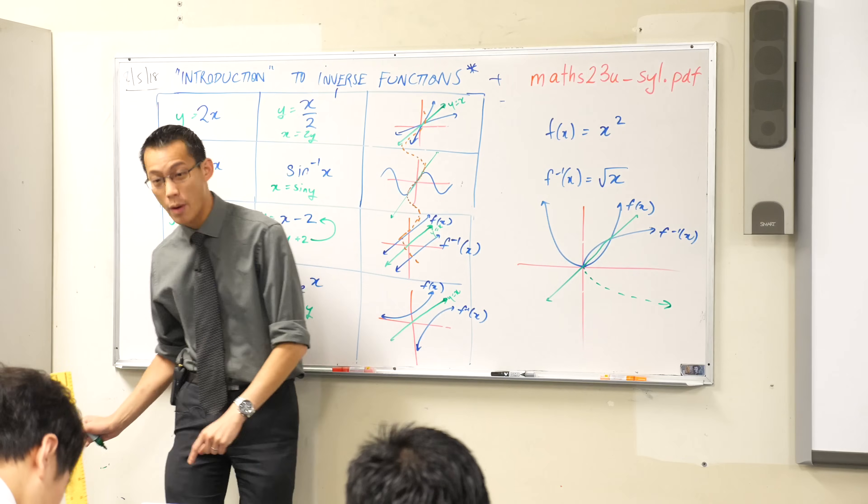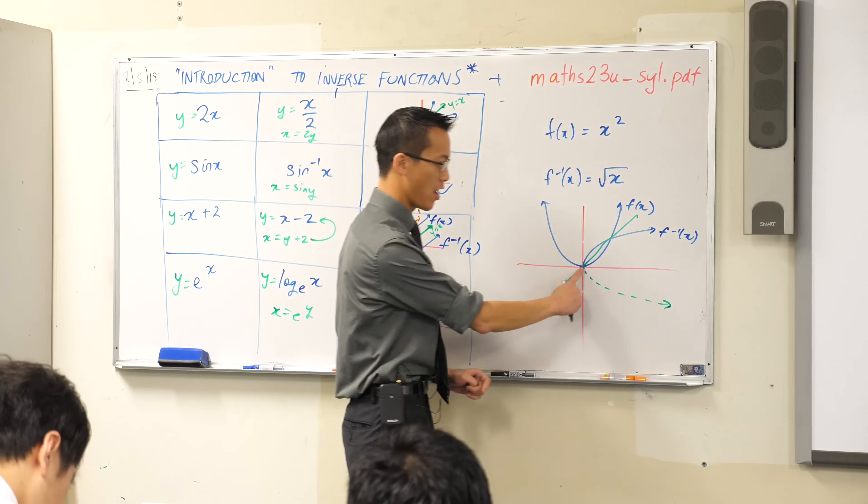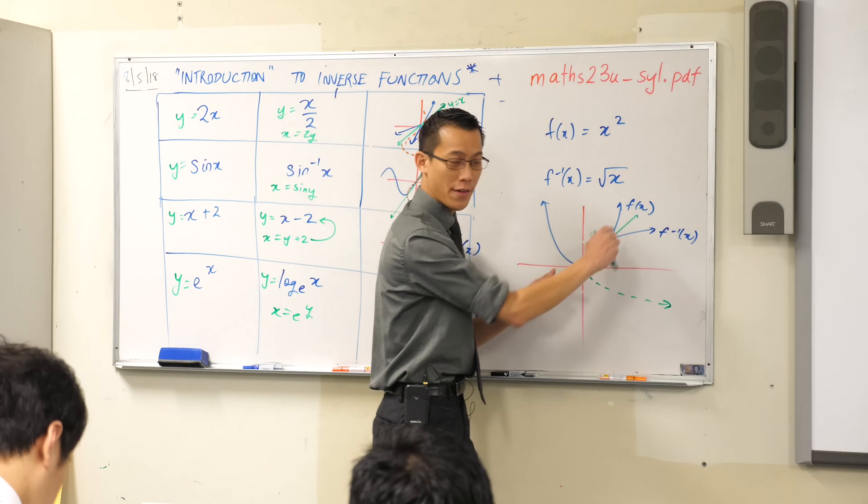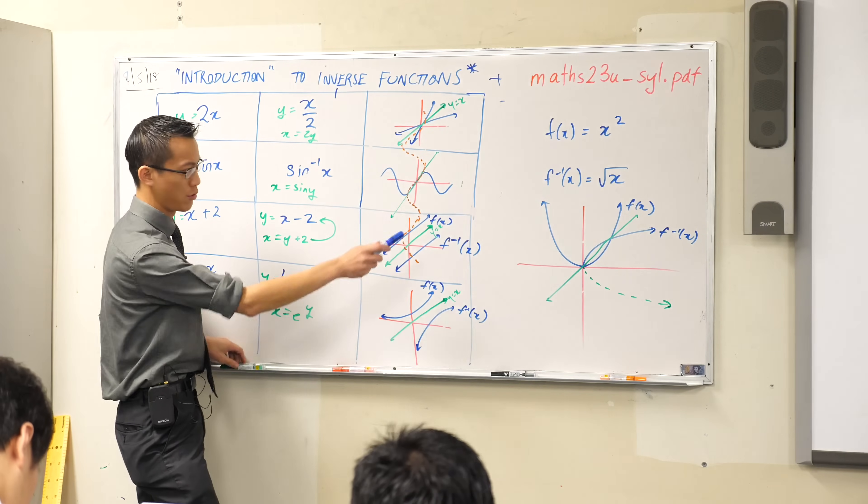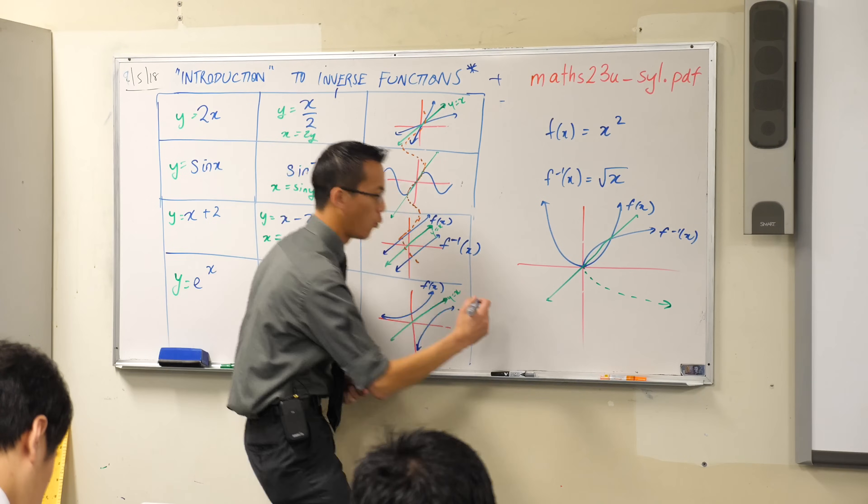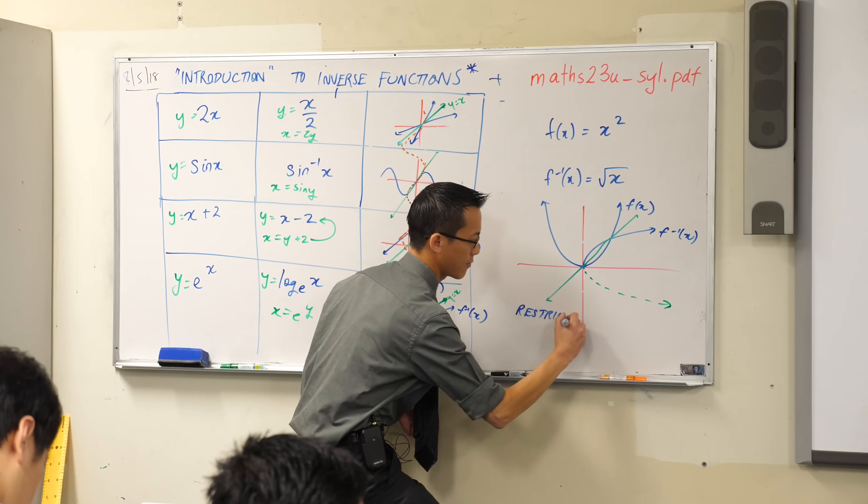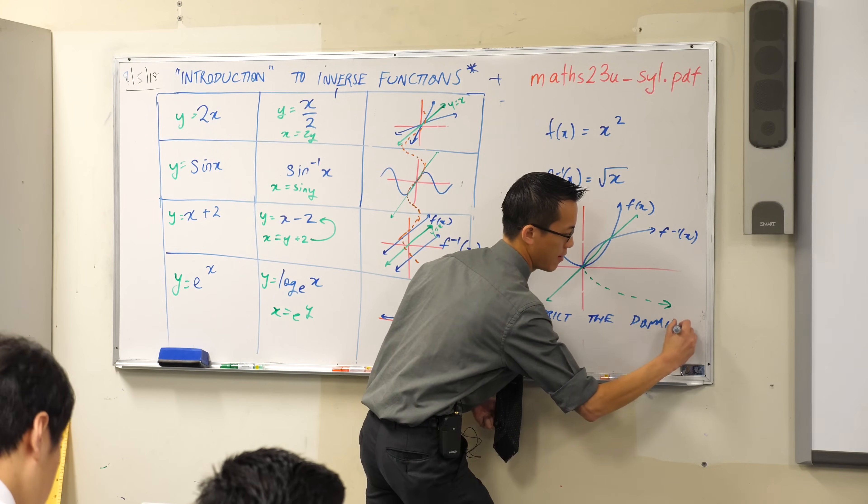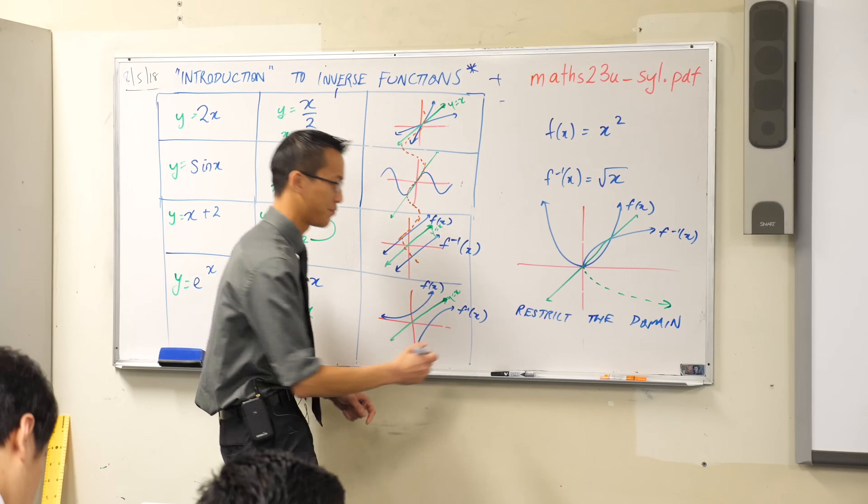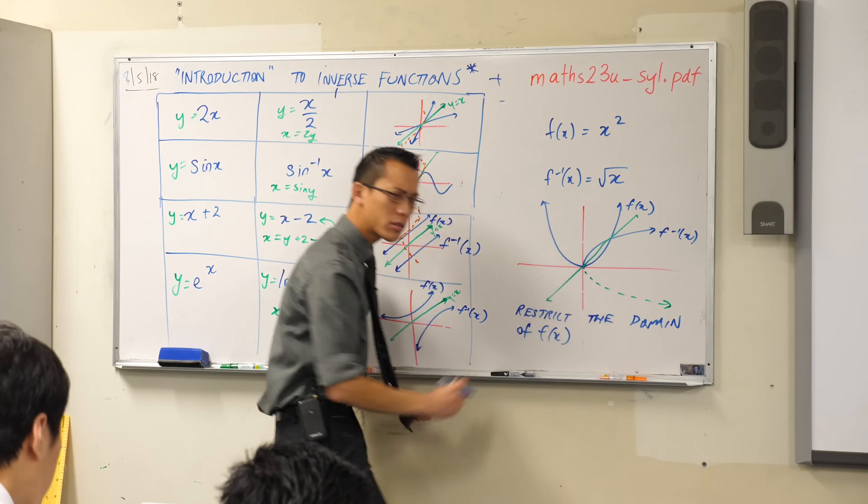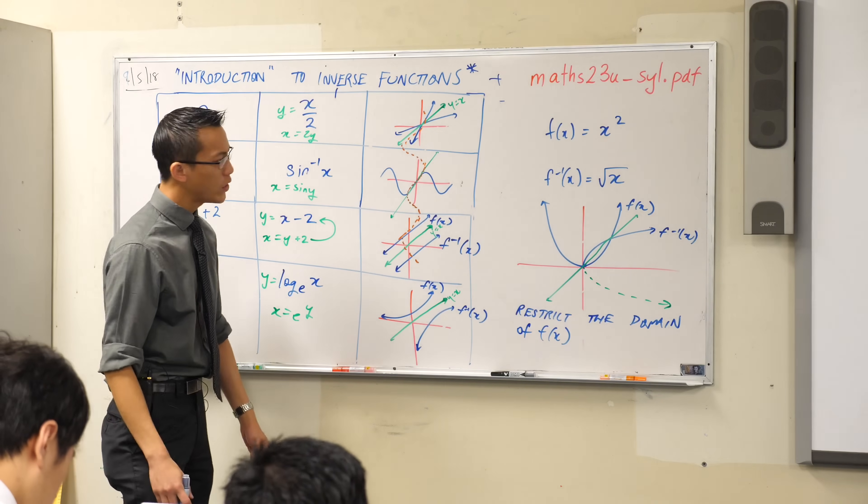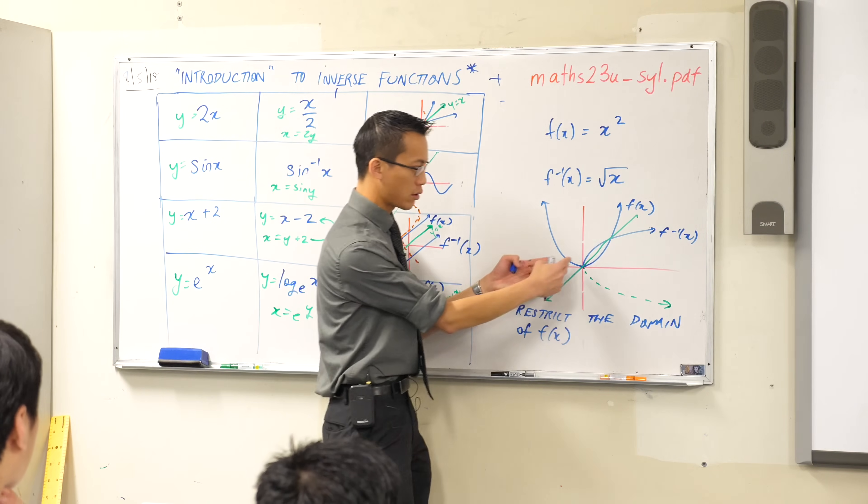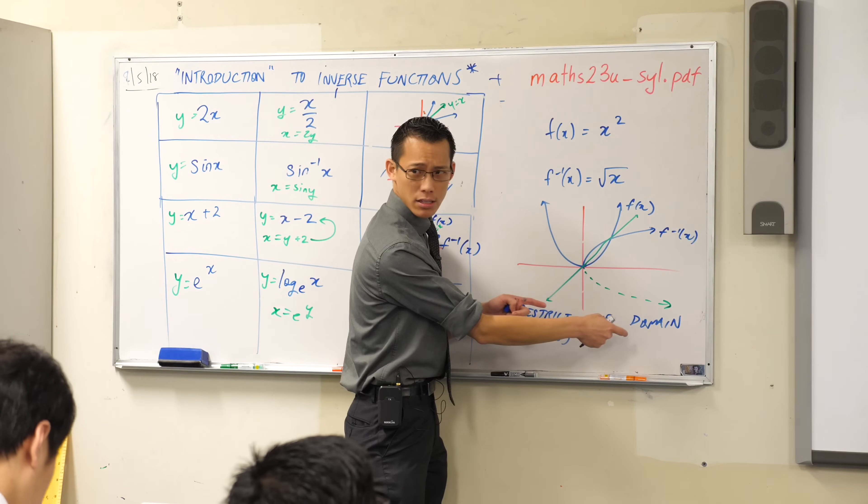So because we want the square root to be a function, because that's useful to us, we say, oh, we're going to cut that guy out. We're only going to look at this particular part of f of x. This is really important. Write this down underneath where you've drawn or beside where you've drawn this one. We restrict the domain. We restrict the domain of f of x, the original. What do we restrict it to? Which part of f of x do we look at and then reflect? We look at, and I think it's domain, right? Is domain x's or y's?